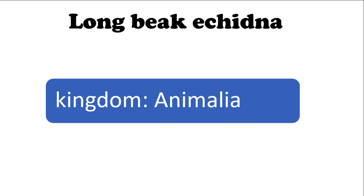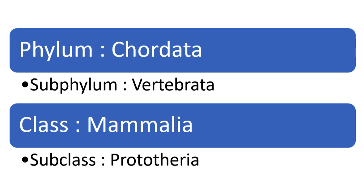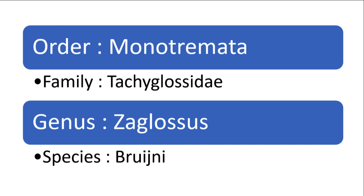Its phylum is Chordata, subphylum Vertebrata, and class Mammalia. Its subclass is Prototheria, and its order is Monotremida, which means they have a cloaca.